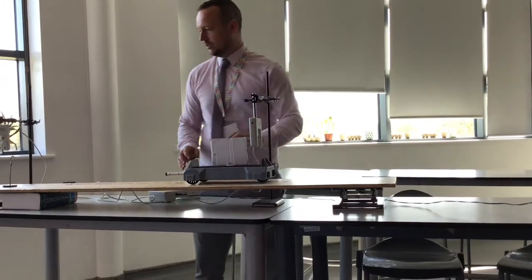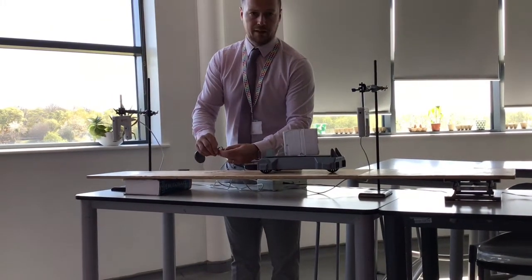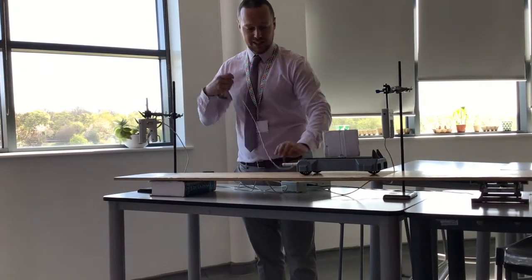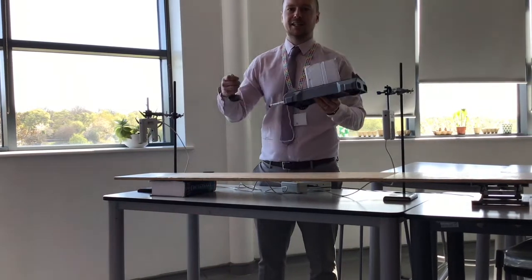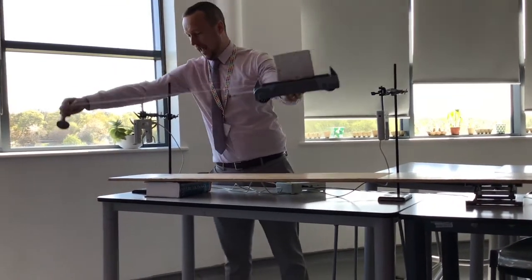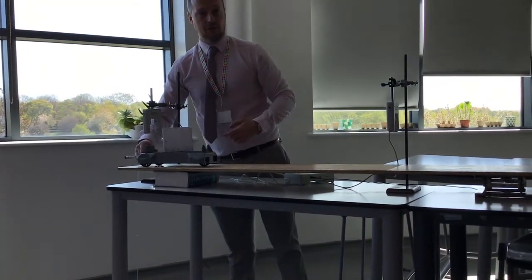The second thing that we need to do is adjust the light gates. We need to make sure that they are the correct distance apart. In this experiment we're investigating acceleration, and that acceleration should be due to the force of the weight on the end of the trolley.